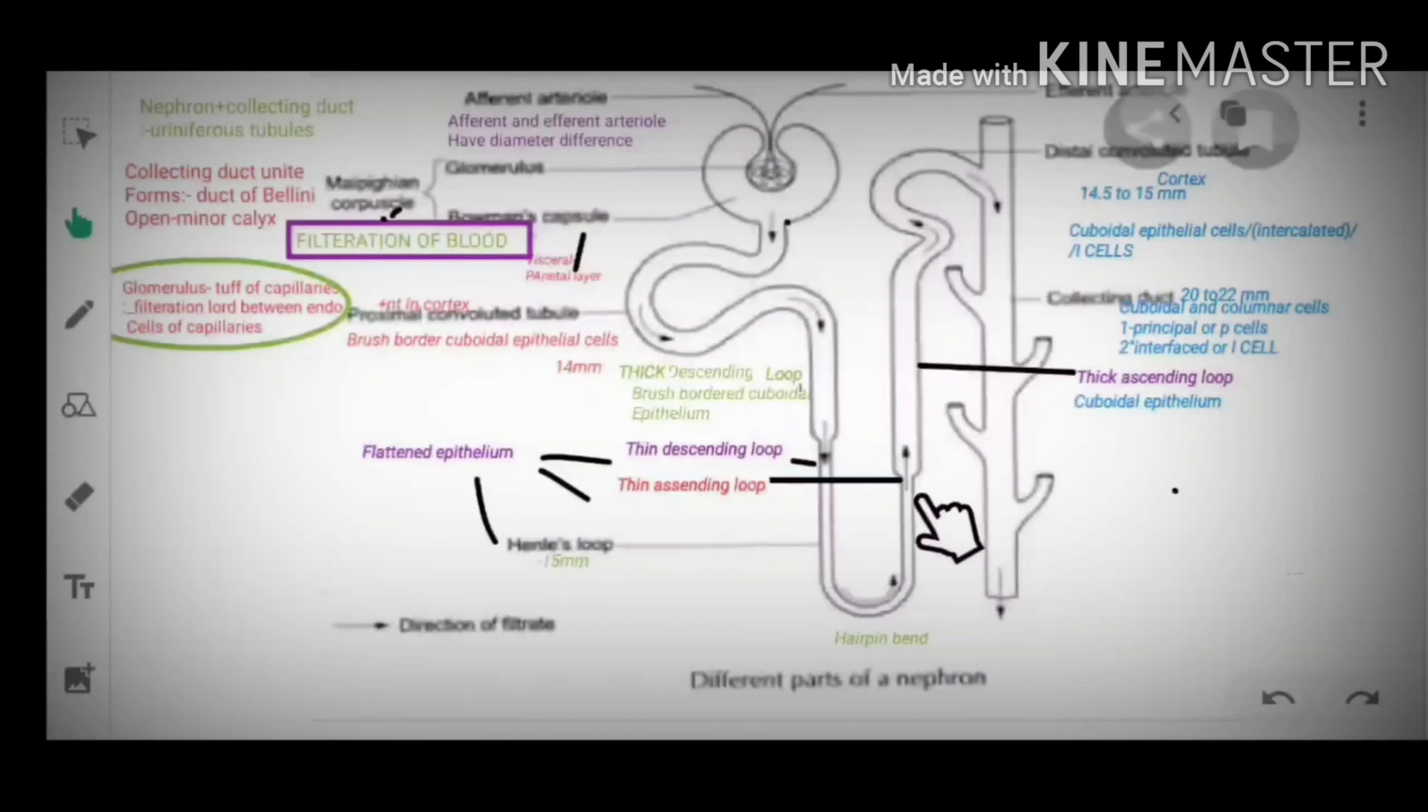Then thin descending loop of Henle, thin ascending loop of Henle, thick ascending loop of Henle, and DCT which is distal convoluted tubule.